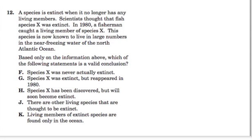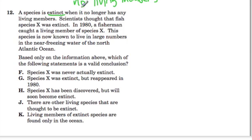So here we have a problem and we're looking at a species that's extinct and we have a definition of it. It's only extinct when it no longer has any living members. So extinct means that there are no living members. That's going to be a useful tool — it's an equality statement, almost like an equation. Extinct equals no living members.